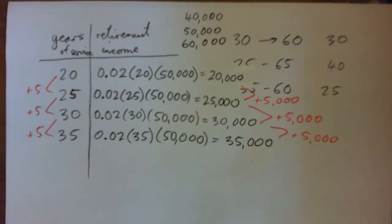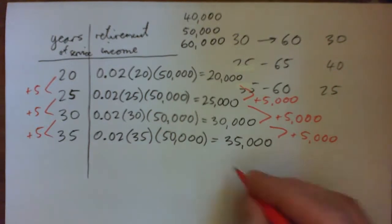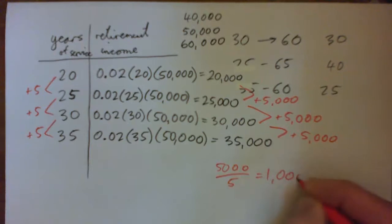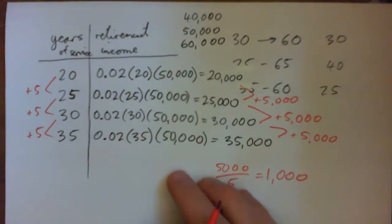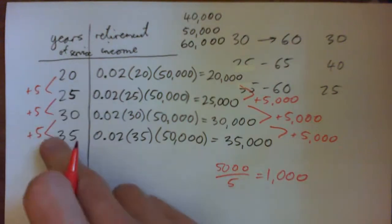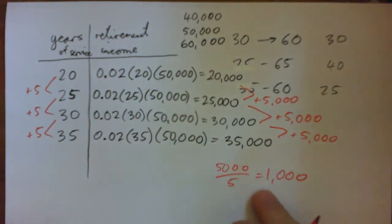Right, so in this case, in fact if I divide, just for fun if I go five thousand over five I get one thousand. So in fact in this particular example that we just made up, for an extra year of service the teacher gets an extra thousand dollars per year in retirement. Does that make sense? Yeah.